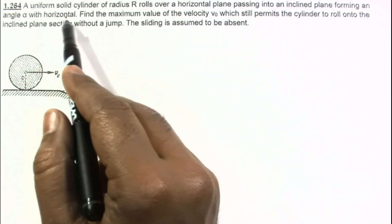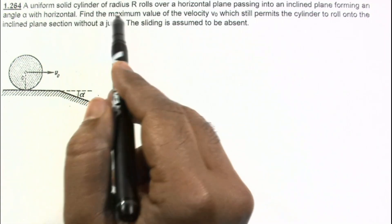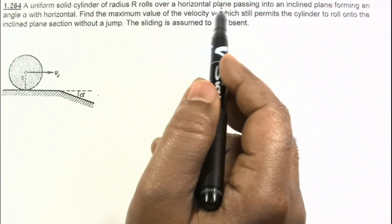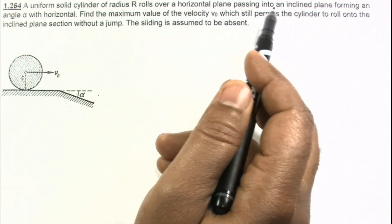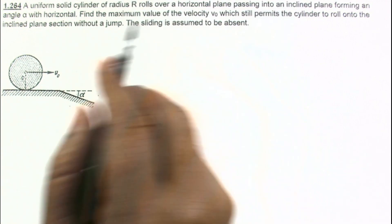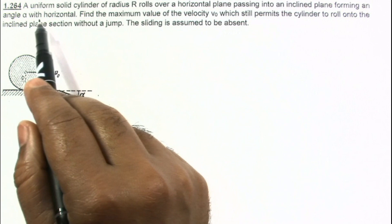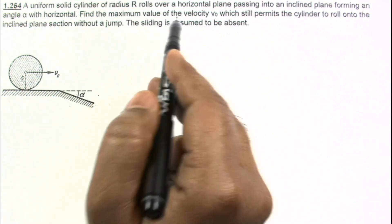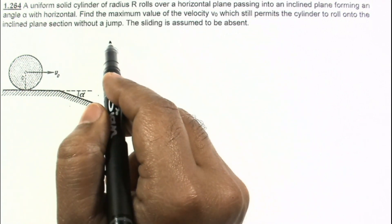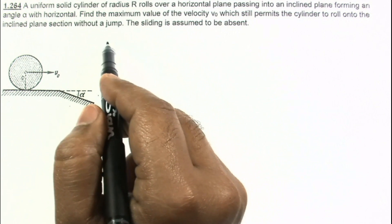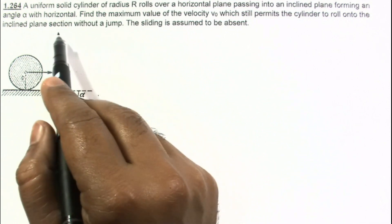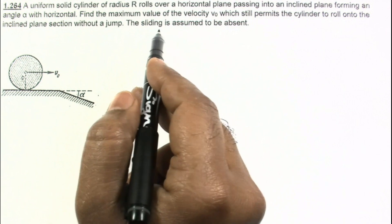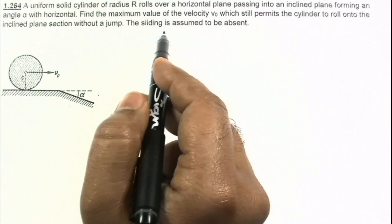In this problem, a uniform solid cylinder of radius R rolls over a horizontal plane passing into an inclined plane forming an angle alpha with the horizontal. Find the maximum value of the velocity V0 which still permits the cylinder to roll onto the inclined plane section without a jump. The sliding is assumed to be absent.